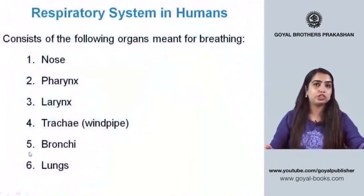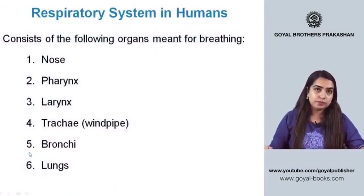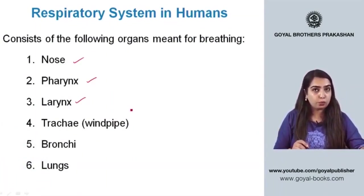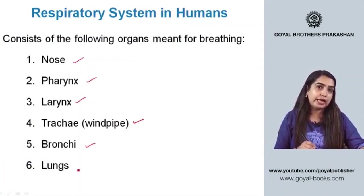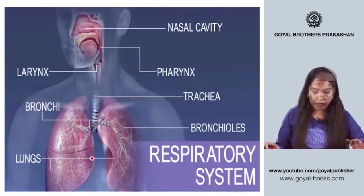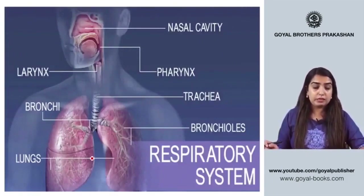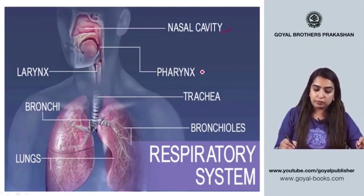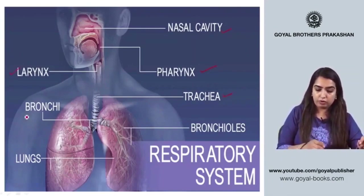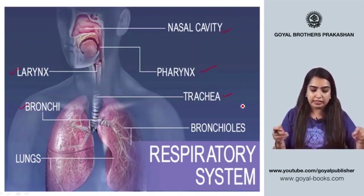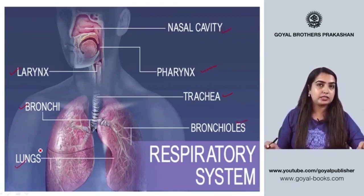The respiratory system in humans consists of the following organs for breathing: nose, pharynx, larynx, trachea (also referred to as the windpipe), bronchi, and lungs. A picture depicts the respiratory system with all labels clearly shown — the nasal cavity, pharynx, larynx, trachea, and bronchi, which further divide into bronchioles inside the lungs.